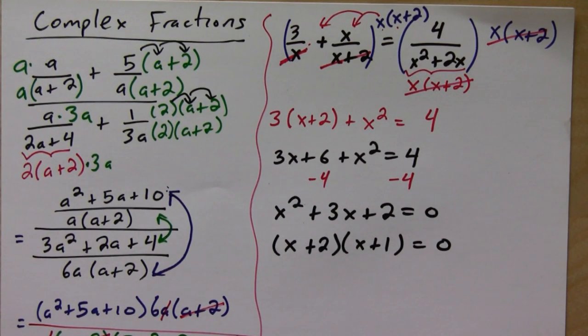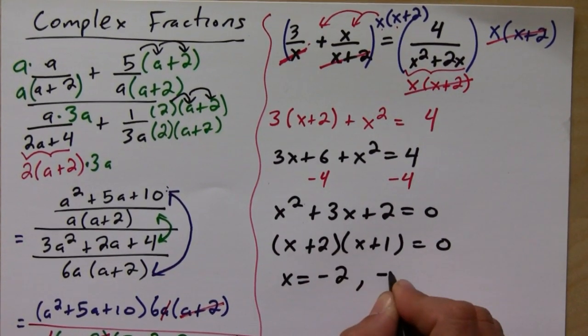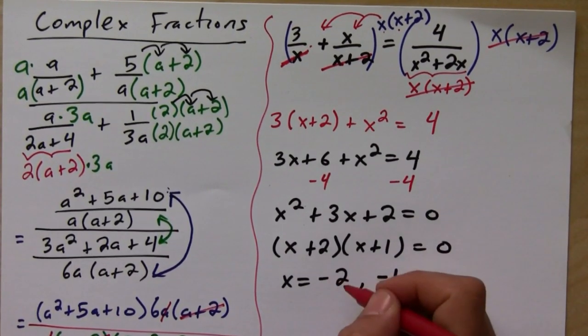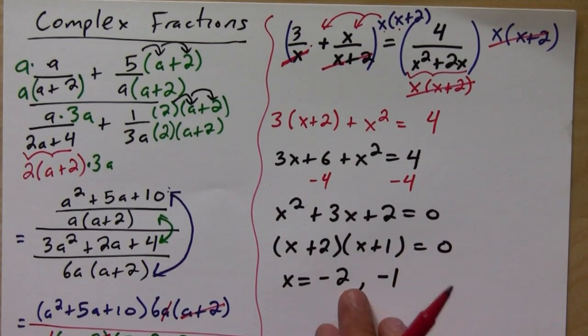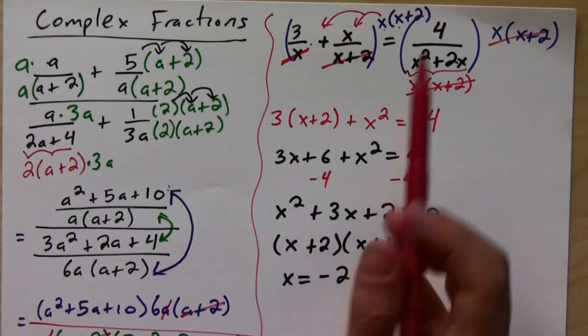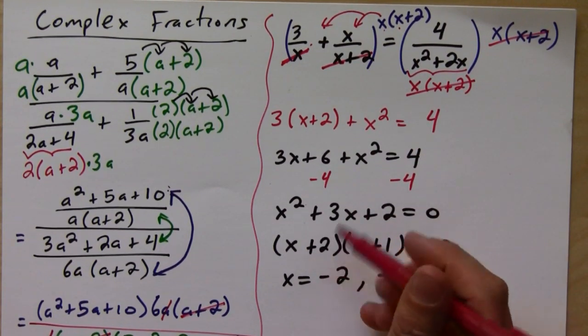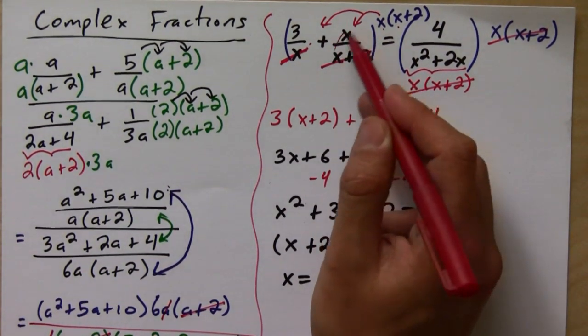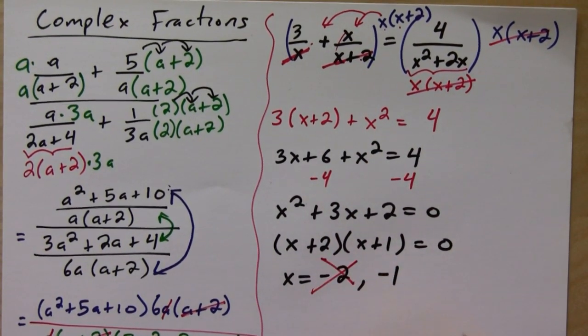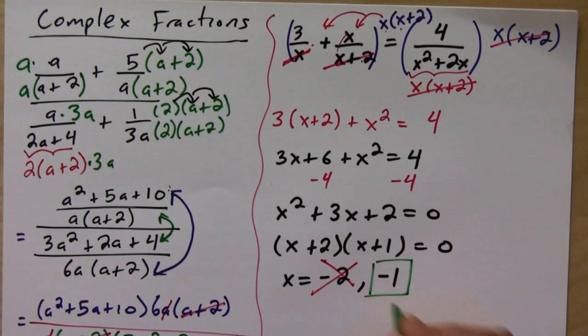So then what we end up getting are two answers - from this one we get negative 2, and from this one we get negative 1. The only thing again is you have to be really careful. You have to go back and make sure that both of these are in the domain, meaning that when you plug these in you don't arrive at something that's undefined. So notice that if I plug in negative 2 into this fraction, what I get is zero in the denominator, which is undefined. So this number negative 2 is actually not a solution, so the only solution is actually just negative 1.